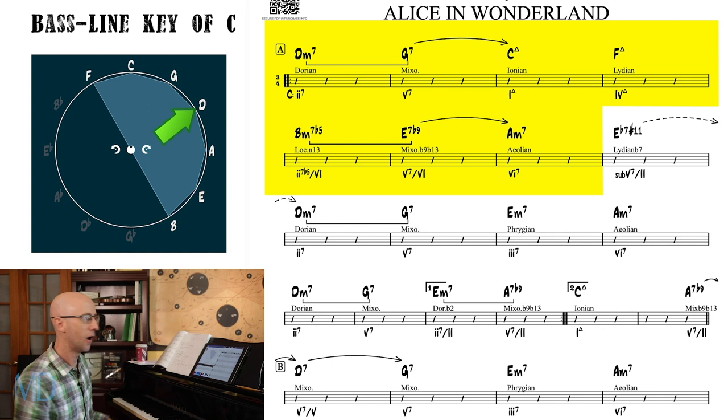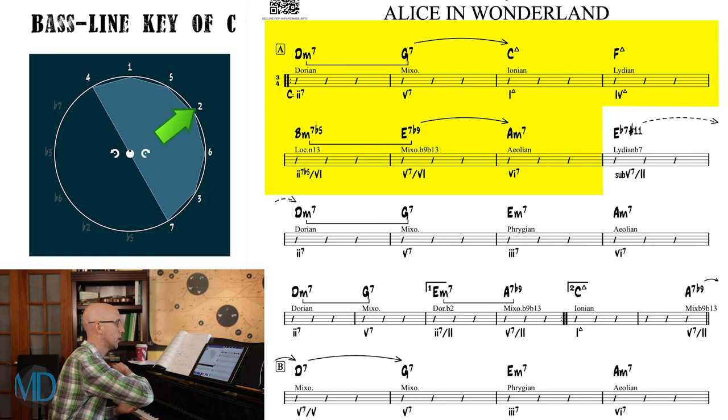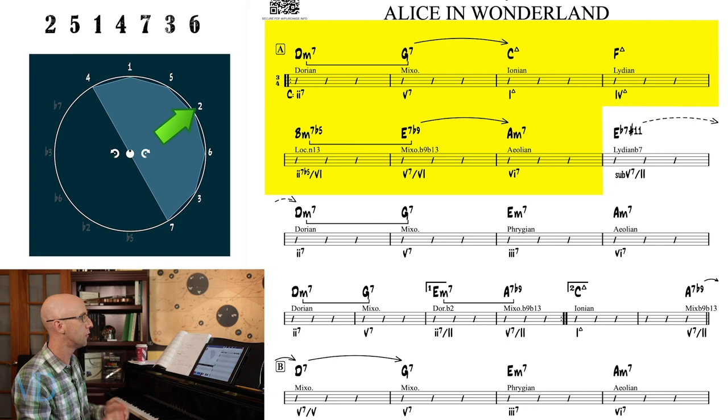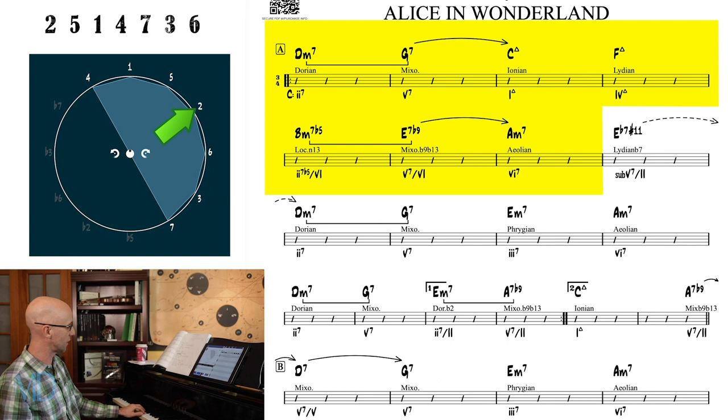It's also helpful to see this scale by way of the scale degrees. So now what we do if we start on D, we can start on any note really, but our song starts on D. We see it now from this perspective of 2, 5, 1, 4, 7, 3, 6, and then back to 2. D, G, C, F, B, E, A, D, G, C, F, B, E, A.